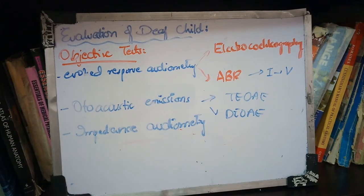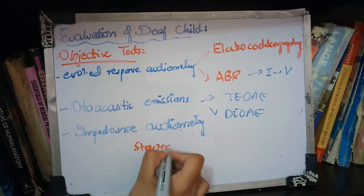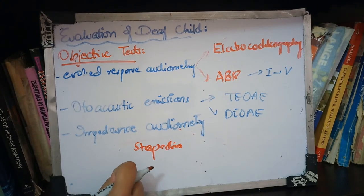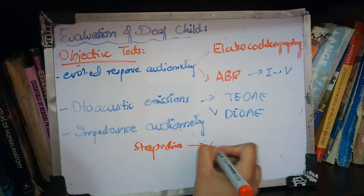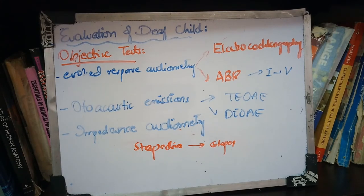Impedance audiometry is your last test. The stapedius muscle is present in your middle ear and generates the stapedial reflex, which is important for impedance matching. When there are very loud sounds, the stapedius muscle contracts, pulling the stapes bone back slightly, so sound cannot be transferred to the inner ear. In impedance audiometry, we check whether at 70 to 100 decibels, the stapedial reflex is active or not. If the stapedius muscle contracts effectively, the patient has no problem.